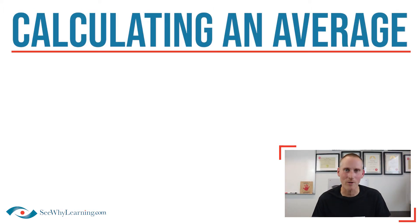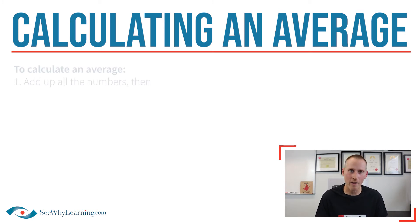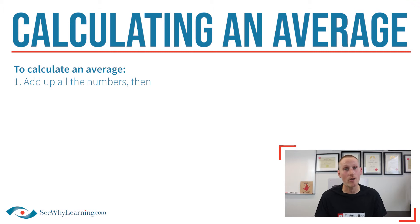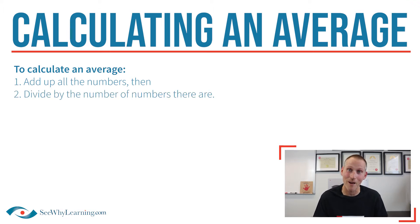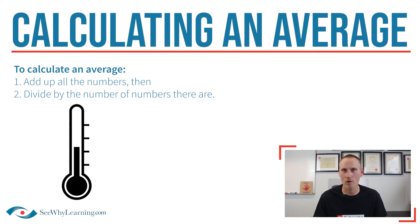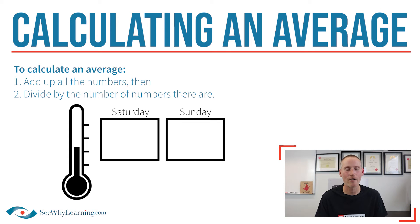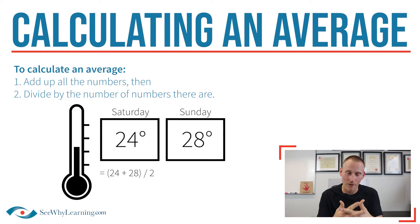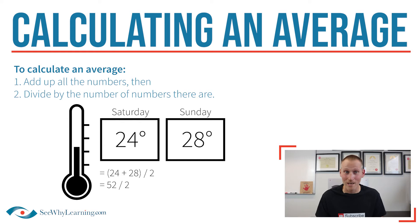Just so we're all starting from the same place, let's calculate a simple average together first. To calculate an average, you just add up all the numbers you want included, then divide it by the number of numbers there are. For example, if you wanted to figure out the average temperature over the course of the weekend, and the temperatures were 24 and 28 degrees, we would just add those together to get 52 and then divide it by two, because that's how many temperatures we have recorded. We get an average temperature of 26.